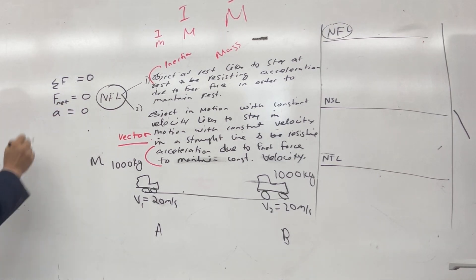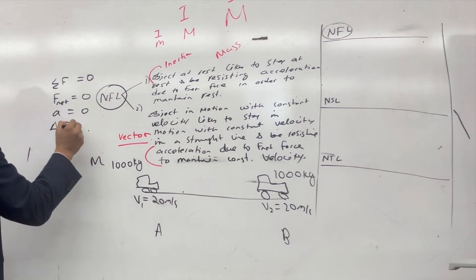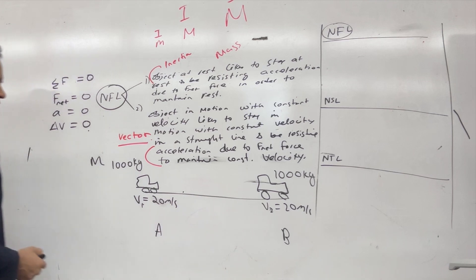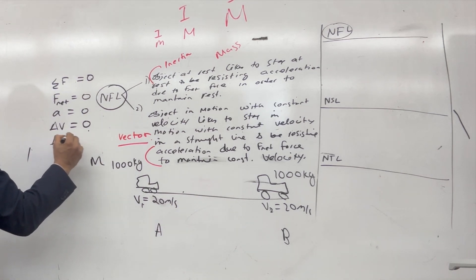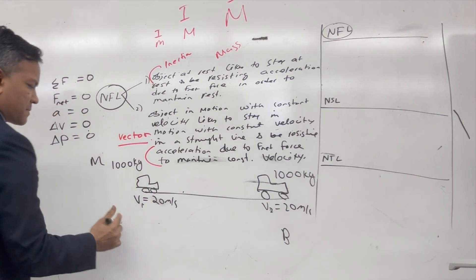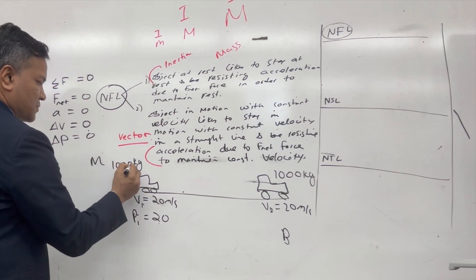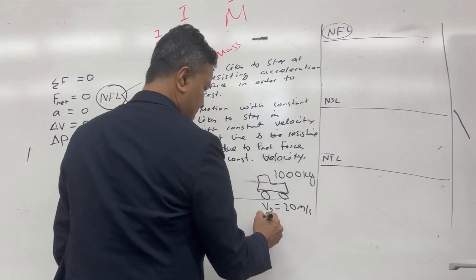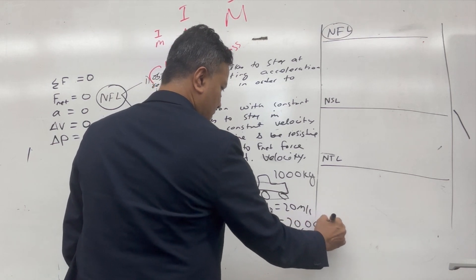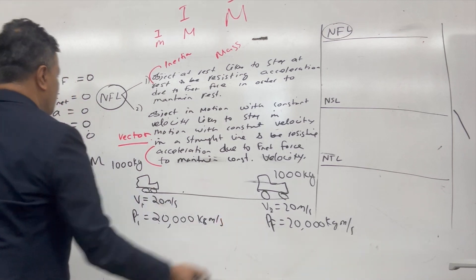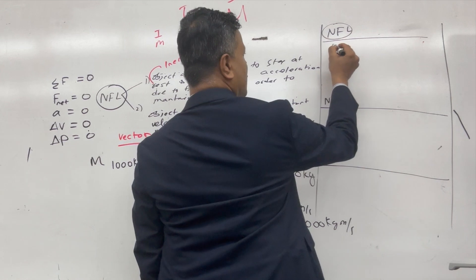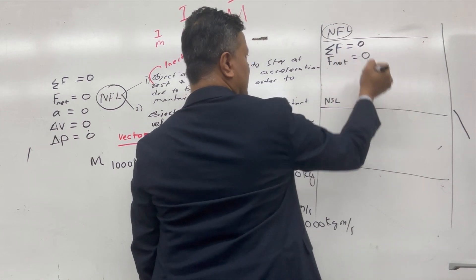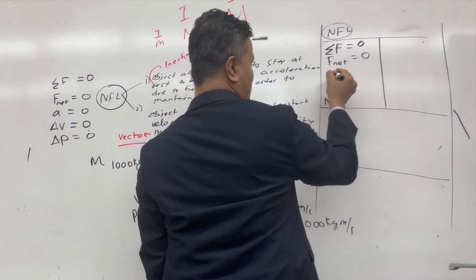Since net force is zero, acceleration is zero. Since acceleration is zero, change in velocity is zero — velocity final is 20, velocity initial is 20, so change in velocity is zero. Change in momentum is also zero. Momentum initial is 20,000 kilogram meters per second, and momentum final is also 20,000 kilogram meters per second. So change in momentum is zero. That's Newton's First Law: sum of all forces is zero, net force is zero, which is why change in momentum is zero.